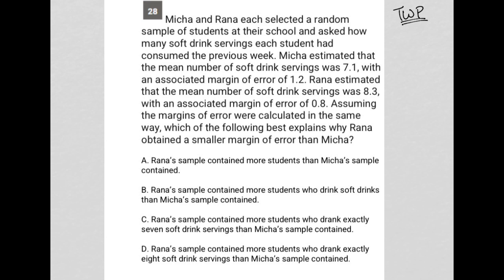The next sentence: Misha estimated that the mean number of soft drink servings was 7.1 — so that's Misha's estimate. I'm going to say M equals 7.1 for the mean, with an associated margin of error of 1.2, so that means plus or minus 1.2. The mean could be 1.2 higher than 7.1 or 1.2 lower than 7.1 — that's what margin of error means. So this is mean plus or minus ME for margin of error.